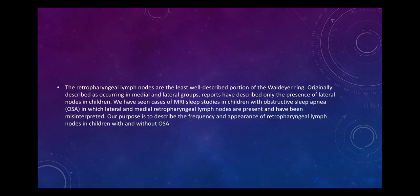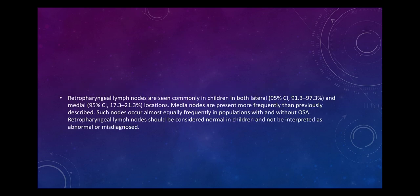The retropharyngeal lymph nodes are the least well-described portion of Waldeyer's ring. Originally described in medial and lateral groups, reports have described only the presence of lateral nodes in children. MRI sleep studies in children with obstructive sleep apnea have shown lateral and medial retropharyngeal lymph nodes that have been misinterpreted. A particular study found retropharyngeal lymph nodes commonly in children — lateral in 95% of cases — with medial nodes present more frequently than previously described, occurring almost equally in populations with and without obstructive sleep apnea.